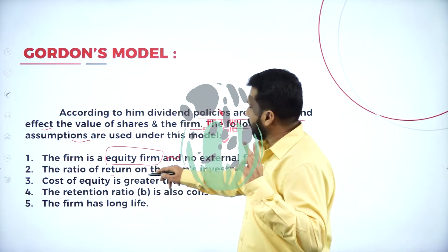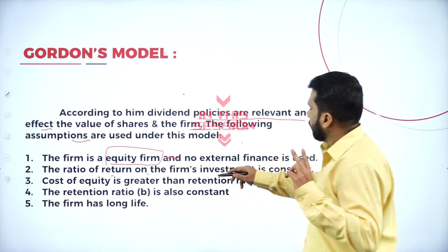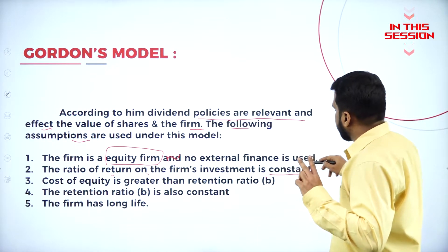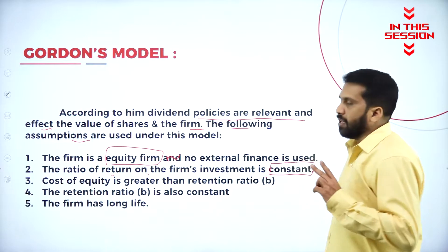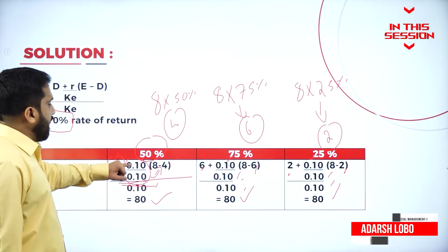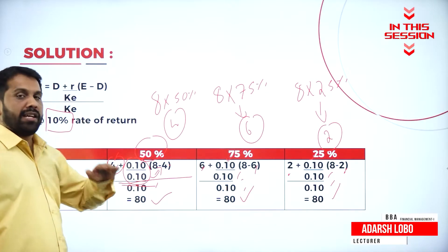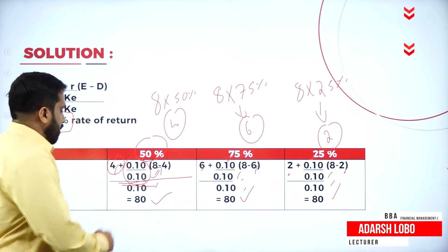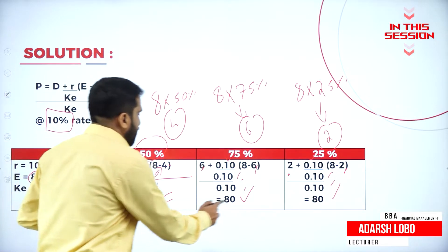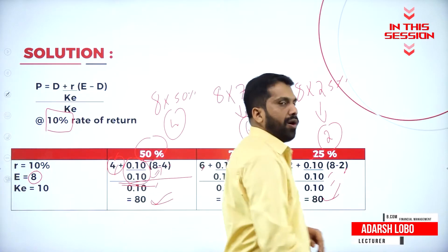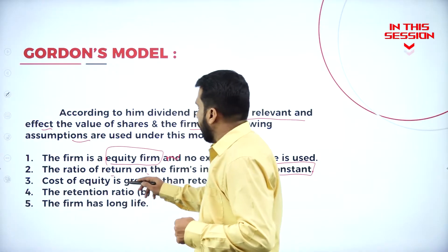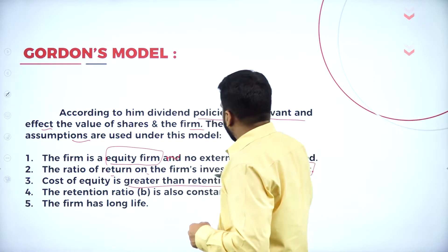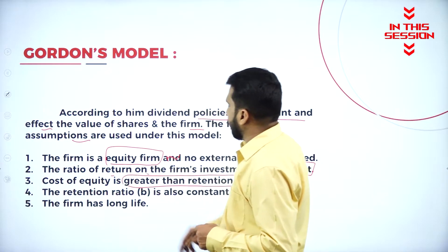The ratio of return on the firm investment is constant. Cost of equity and return — if both are same, your answer will be common. If cost of equity is greater than retention ratio, that also applies.